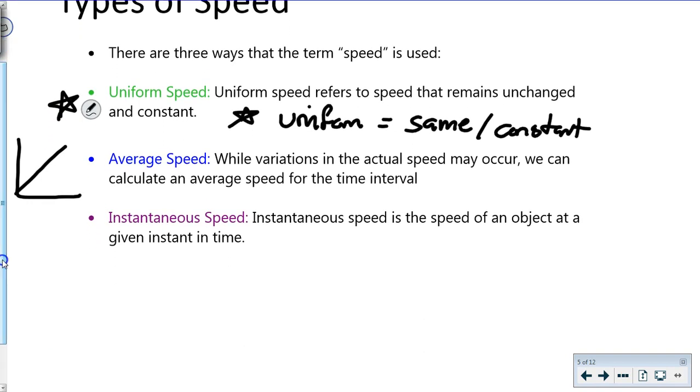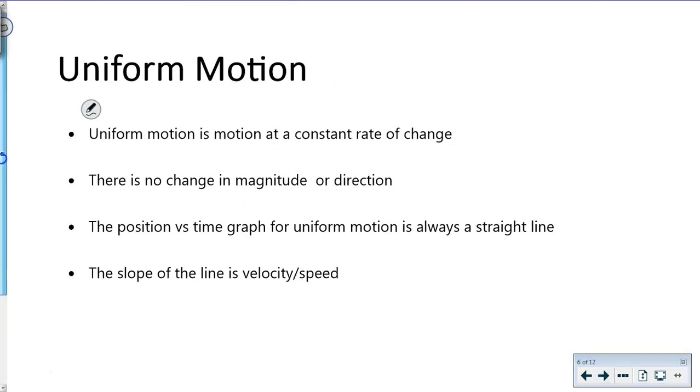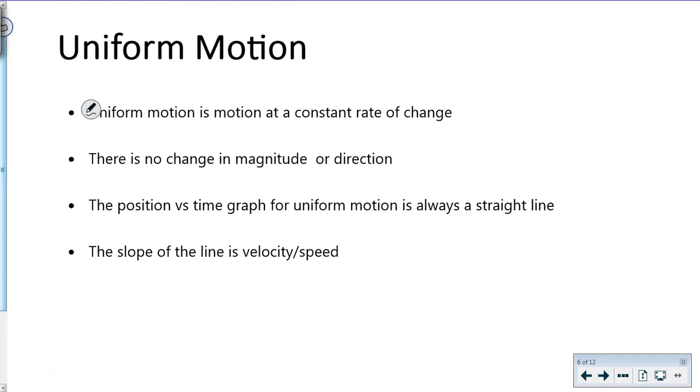Instantaneous speed is something we won't deal with until we get to acceleration. This is where you look at speed at one given point in time, like a radar gun. You could drive the speed limit for eight hours, but if the radar gun catches you in those two seconds you're speeding, your instantaneous speed makes it look like you were going too fast.